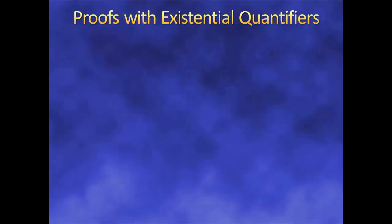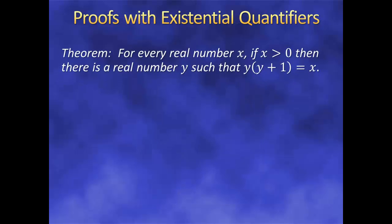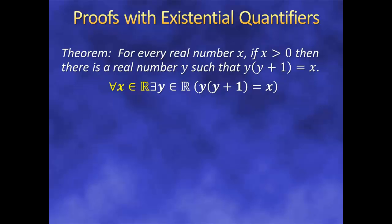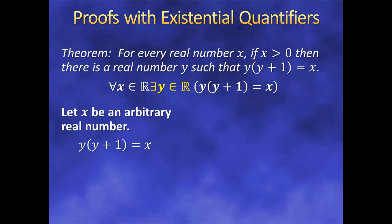One thing you can sometimes do for an existence proof is temporarily assume that p is true and try to find out what x must be, working backwards. Then in your proof, you just start off with that particular x. Take a look at this one: for every real number x, if x is greater than 0, then there is a real number y such that y(y+1) equals x. Writing this down symbolically, we can see that our primary goal is to prove a universal quantifier. So we let x be an arbitrary real number and assume it's greater than 0. Now our goal is to prove an existential quantifier: there exists a y such that y(y+1) equals x. How can we come up with a y that works? Well, let's assume it's true and solve for y.